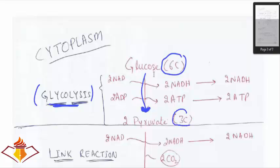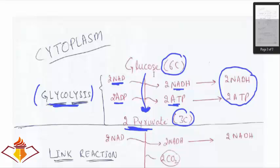Glucose has 6 carbons while pyruvate has 3 carbons, so one glucose molecule produces 2 pyruvate. In that process, 2 NAD are reduced to 2 NADH and 2 ADP are phosphorylated to 2 ATP. So the net products of glycolysis are 2 pyruvate, 2 NADH, and 2 ATP.